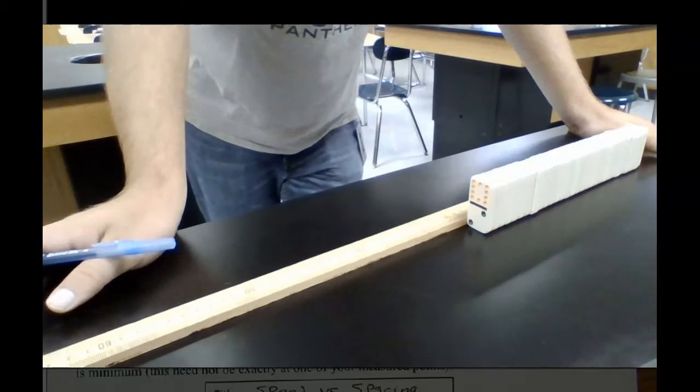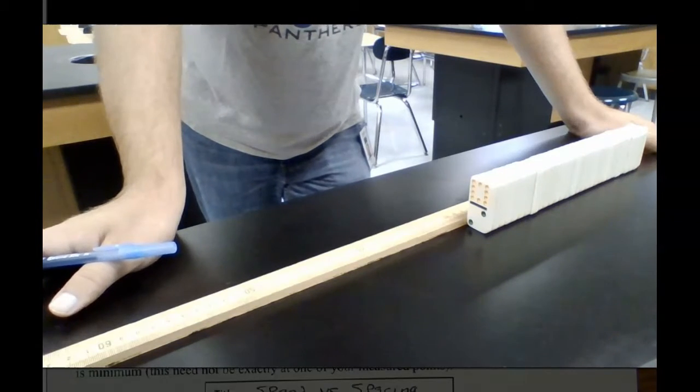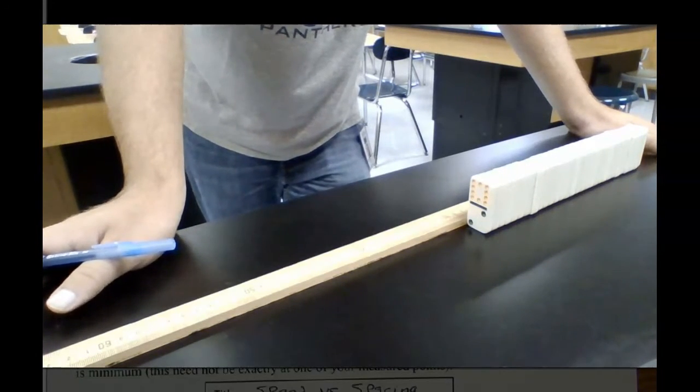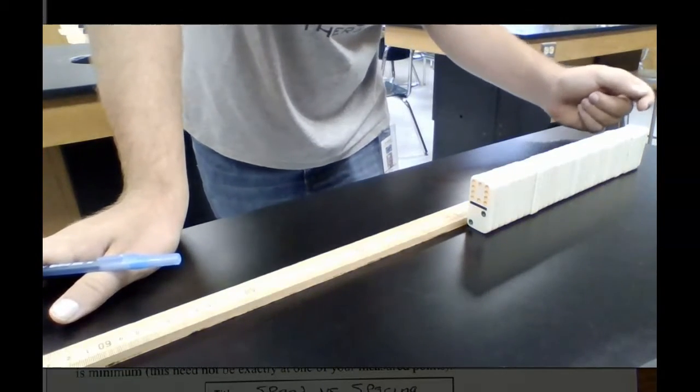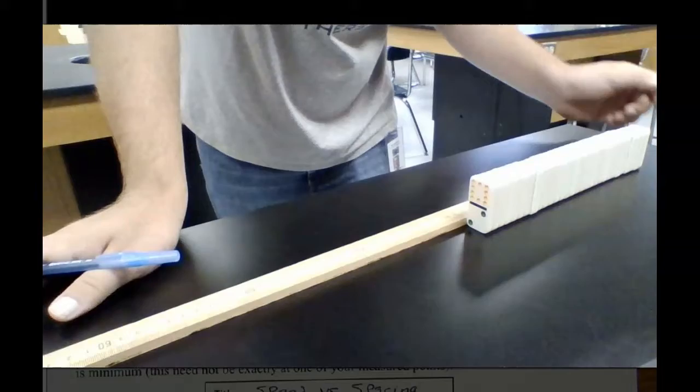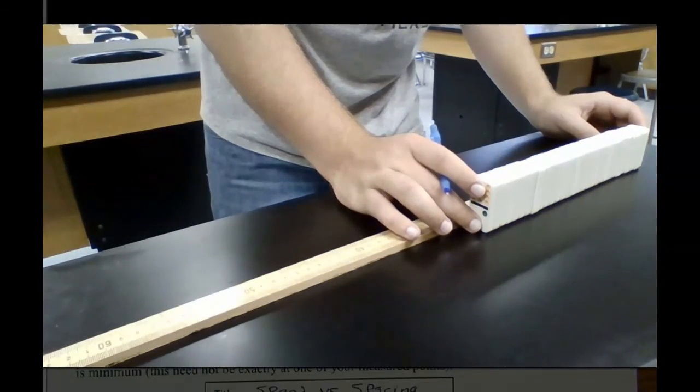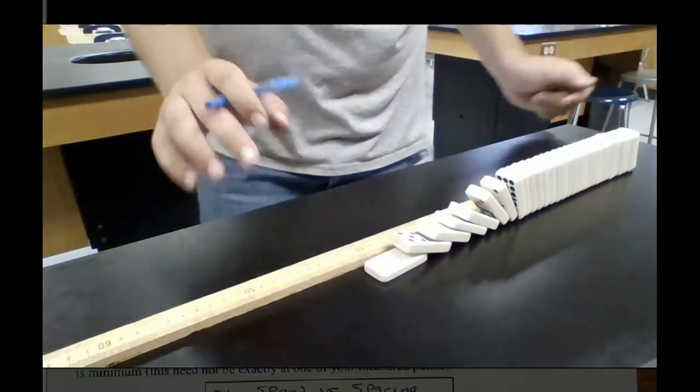For this next one, the total spacing is 28.6. The average spacing in between dominoes is 0. They are all touching each other. Okay, I'm going to do another countdown. 3, 2, 1, 0. Oh, didn't hit it hard enough. All right, got to restart. 3, 2, 1, 0. There it is.